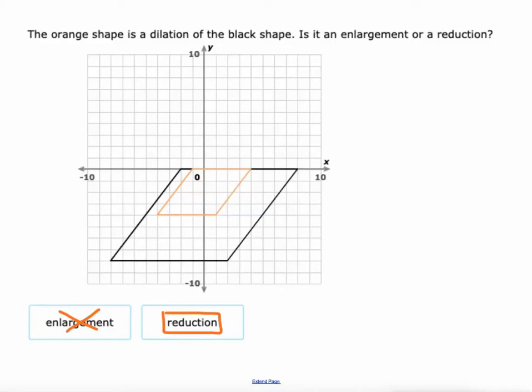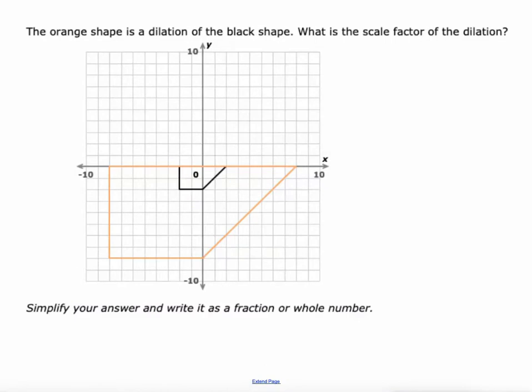So now that we've got enlargement versus reduction down, here we go into scale factors. Now we're trying to figure out the scale factor of this enlargement. What I like to concentrate on actually is the origin. This distance right here is a length of two. So this point is two away from the origin, as opposed to this point right here, which is the corresponding point. And it is eight away from the origin.